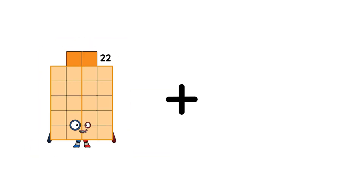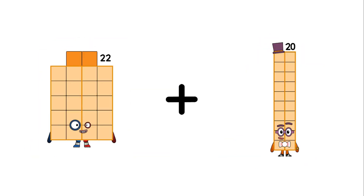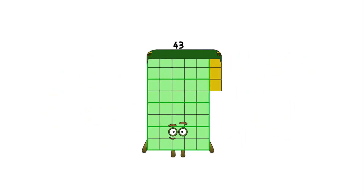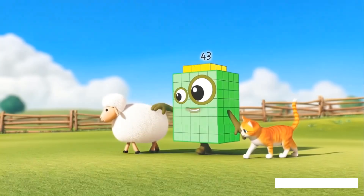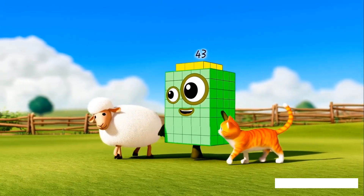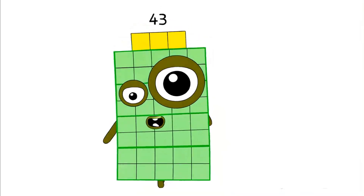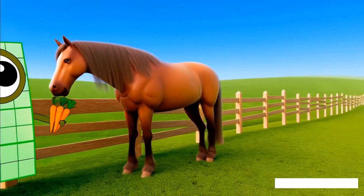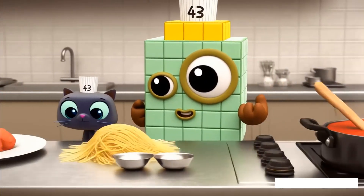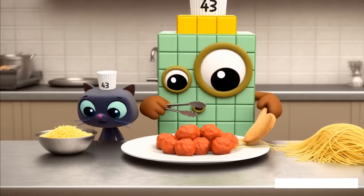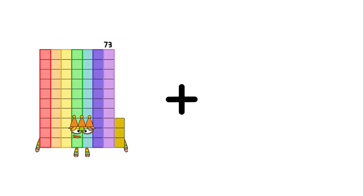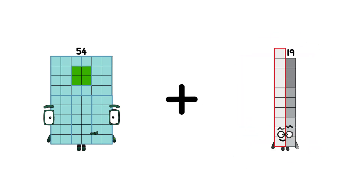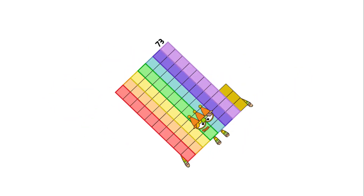22 plus 21 equals 43. 54 plus 19 equals 73.